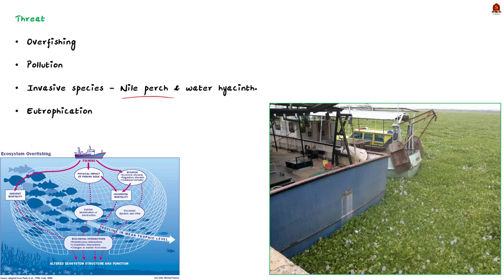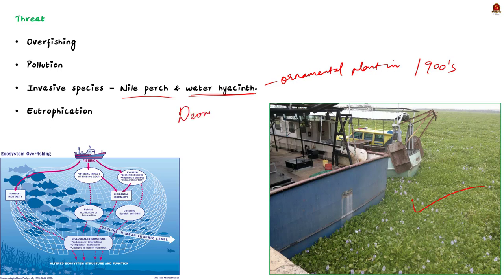Water hyacinth is a freshwater plant capable of vigorous growth in water bodies. It was introduced in the African continent as an ornamental plant in the early 20th century and since then it has spread rampantly. In Lake Victoria, the water hyacinth caused a reduction in fish through de-oxygenation of water. It blocked the inflows and outflows of the lake, leading to disruption in fishing activities. It also acts as an impediment to the free movement and transport of goods.